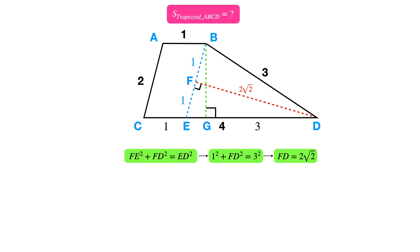By applying the Pythagorean theorem in right triangle FED, we find that the length of FD is 2 times the square root of 2.